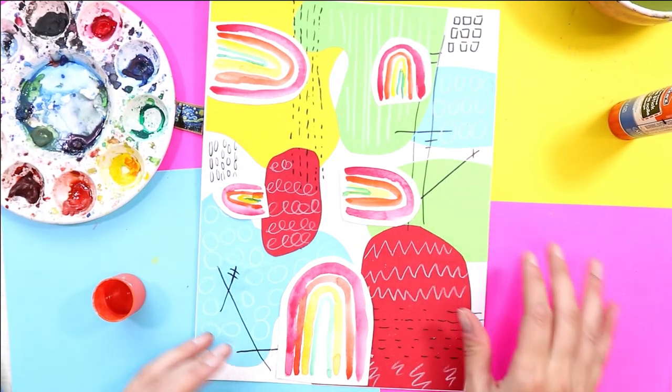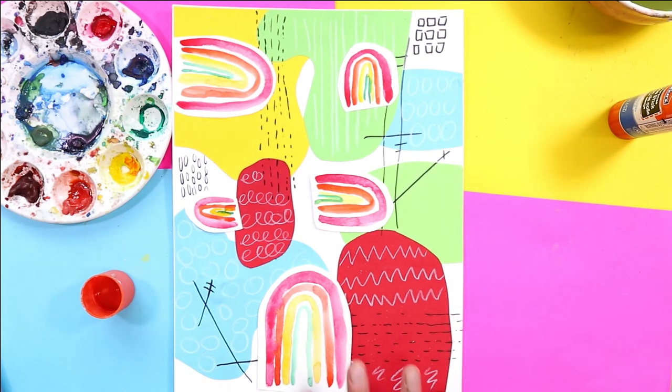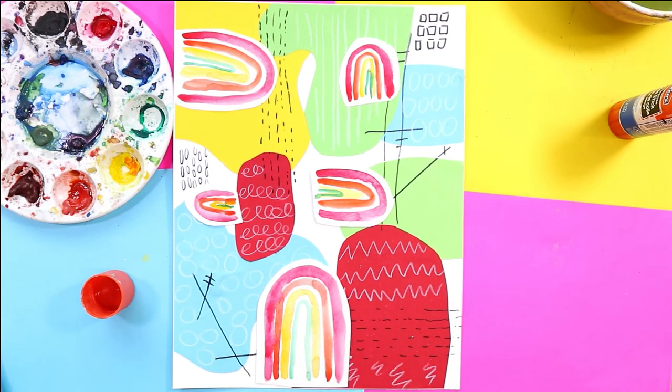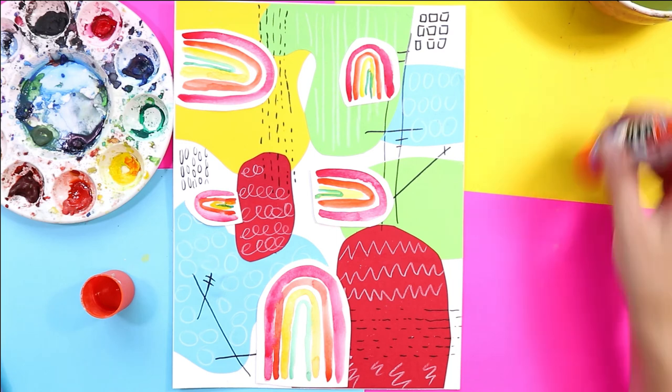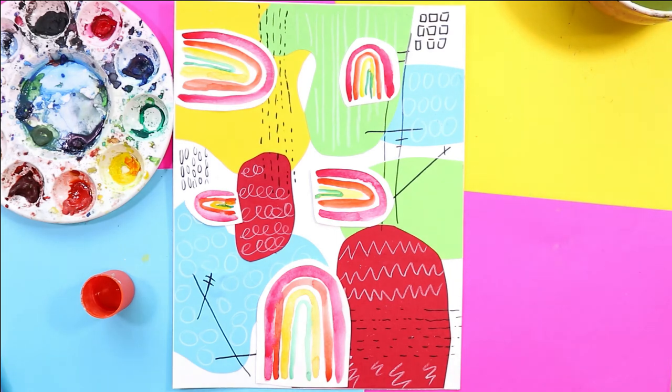Once you're done gluing all of those rainbows, your abstract rainbow art piece that has a lot of different lines for the element of art line is now done.